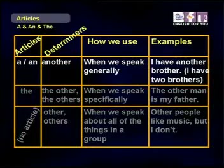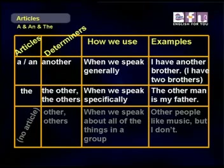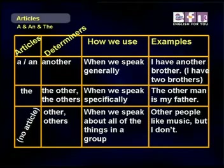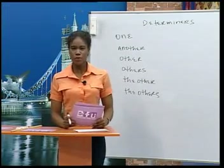Remember how we used the articles before? We were using A, AN, THE, or no article. We can use determiners in the same way. A determiner like ANOTHER is used when we speak generally, like A and AN. So, 'I have another brother' means I have two brothers — here's one brother and here's another. We can say 'the other' or 'the others' when we speak specifically about another group. For example, 'the other man is my father' — there are two men, here's one, and the other one is my father. We use OTHER or OTHERS when we speak about all of the things in a group that we don't belong to, like 'other people like music, but I don't.'